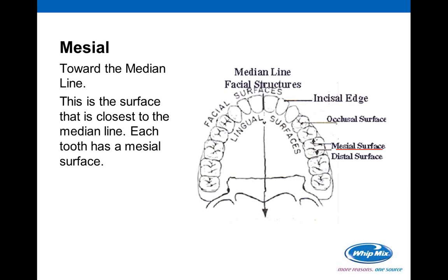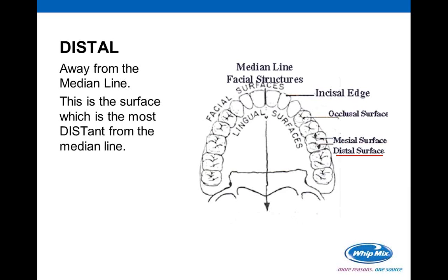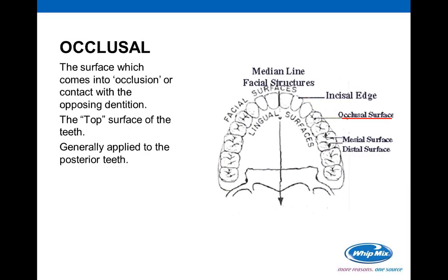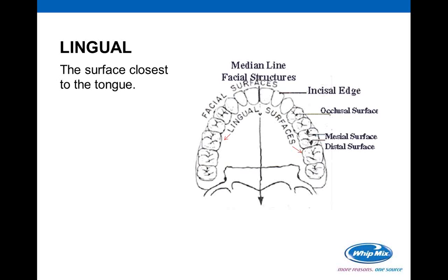Mesial means the surface closest toward the median line — the central line of structure. Each and every tooth has a mesial surface. Distal is the most distant from that median line. The occlusal surface is the surface that comes into occlusion or contact with the opposing dentition — also referred to as the chewing surface or top surface of the teeth.